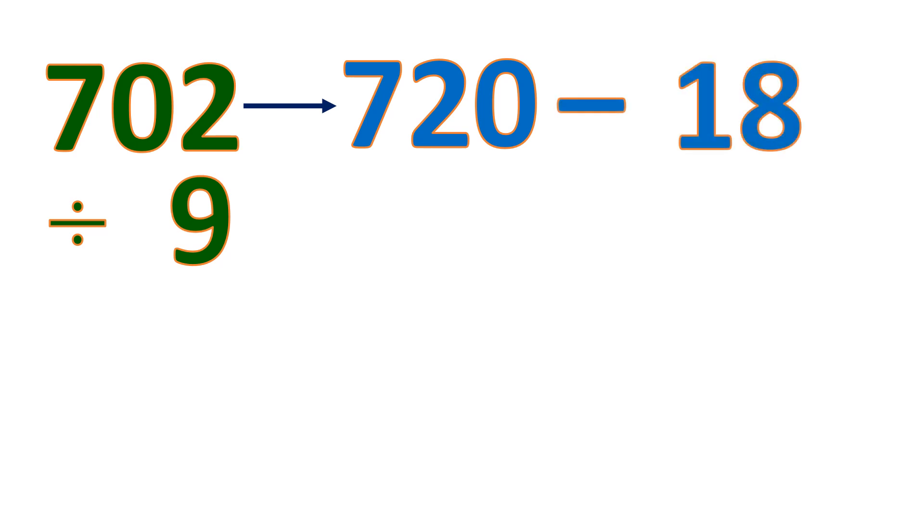Let's put it again, 702 divided by 9. We'll make this 720 because 72 is divisible by 9, and we'll remove 18 so that it's still 702. And 18 is divisible by 9 as well. So let's divide by 9.